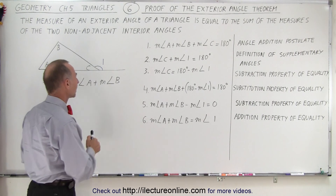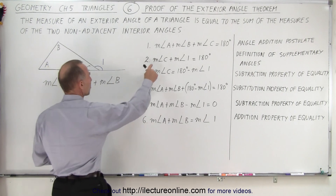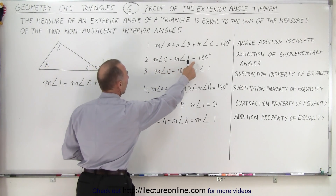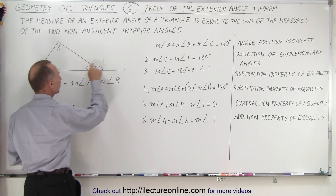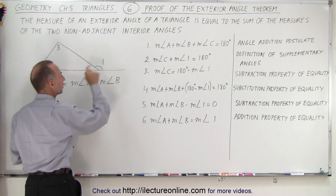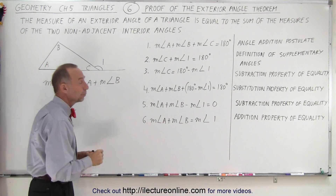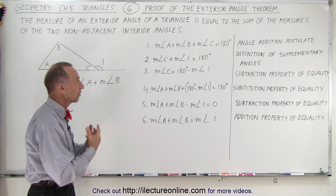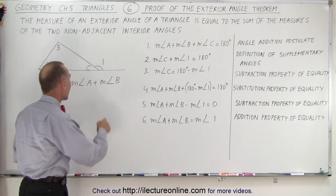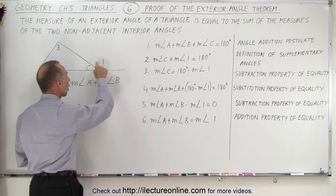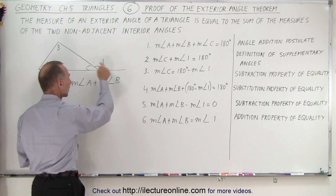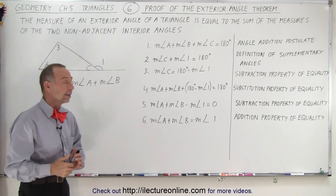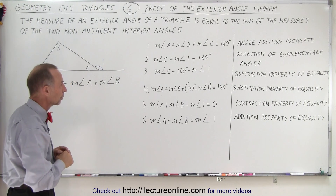Next, we're making the claim that the measure of angle C plus the measure of angle 1 add up to 180 degrees — that's these two angles right here. We can say that because of the definition of supplementary angles. Angle C and angle 1 are supplementary angles, which means the measures of them must add up to 180 degrees.